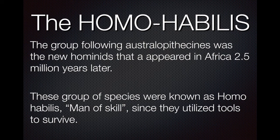Moving on to Homo habilis, otherwise known as the man of skill or the handyman. They're called the handyman because they were the first to begin using tools — though not high-tech instruments, just very primitive tools like using stones to break open nuts. Their brains were a little bigger than Australopithecines, and they grew to be about 100 to 135 centimeters tall, so about three to four feet.